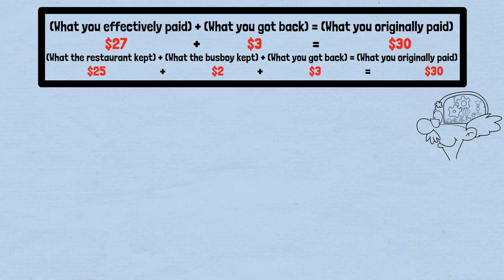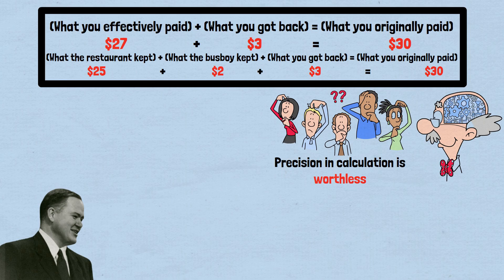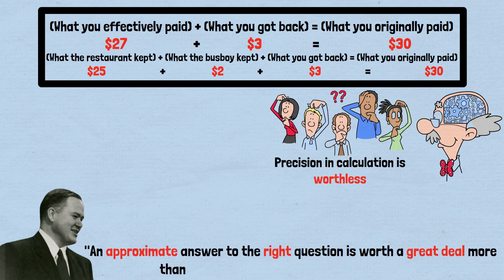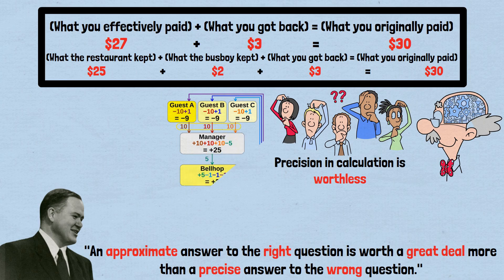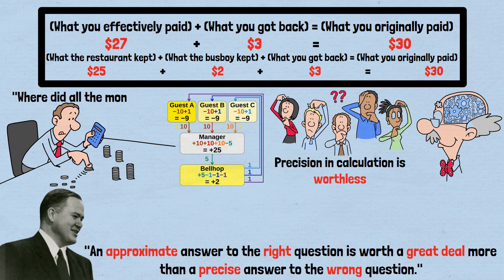This riddle demonstrates something profound about mathematical reasoning: precision in calculation is worthless if you're solving the wrong problem. Legendary statistician John Tukey once said, 'An approximate answer to the right question is worth a great deal more than a precise answer to the wrong question.' The missing dollar riddle is a perfect illustration of this principle — it tricks us into precisely calculating the answer to a meaningless question, while the right question — where did all the money go — has a straightforward answer that requires no mystery solving at all.